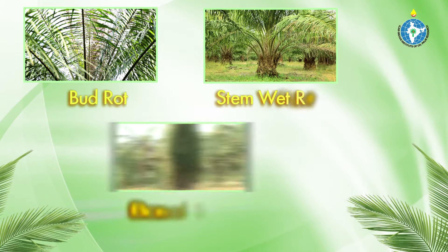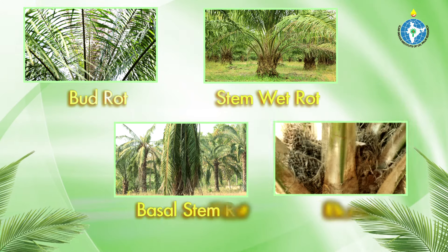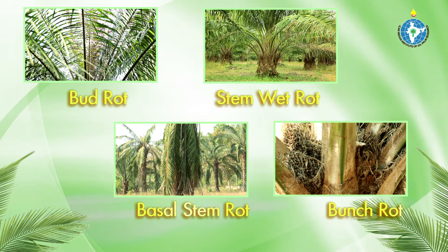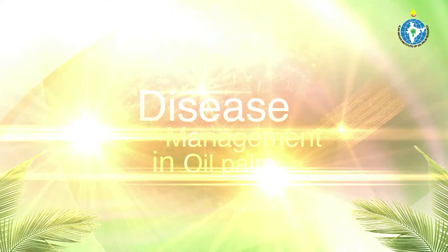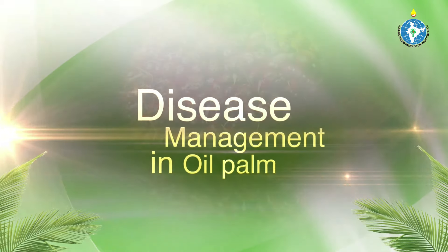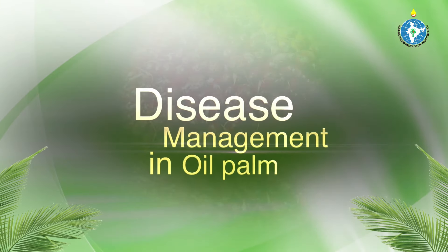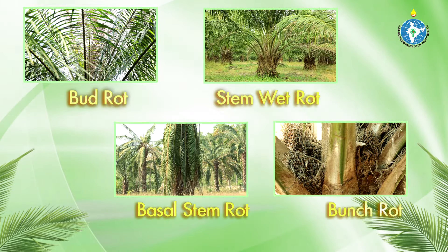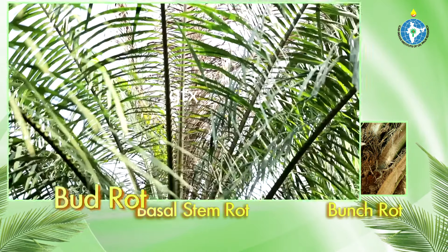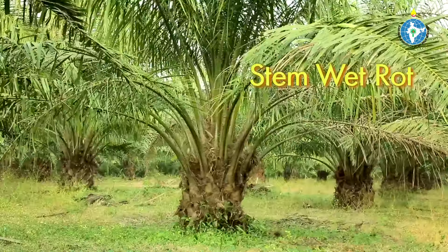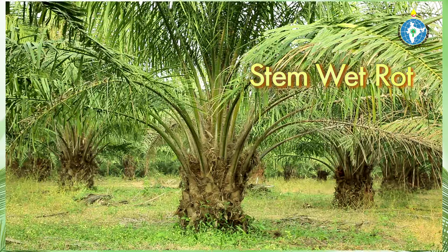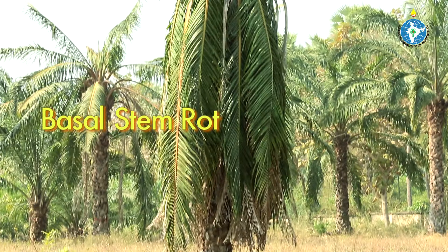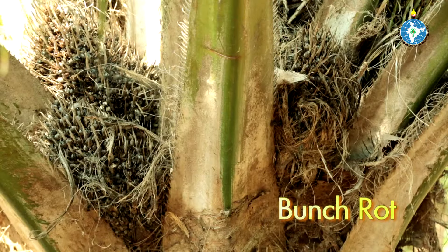It is observed that normally very few diseases occur on oil palm. The most common oil palm diseases are bud rot, stem wet rot, basal stem rot and bunch rot.